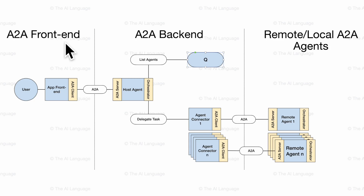Welcome back to the AI Language. Today we are going to do something super exciting — we are going to start with multi-agent A2A setup and development. This video will first explain the architecture I'm going to follow, and then we are going to build upon our A2A client and server architecture that we've already built to further develop it into a multi-agent system where multiple agents can talk to each other.